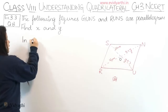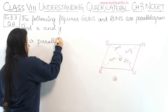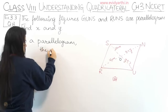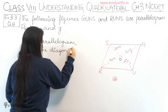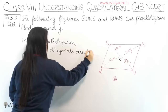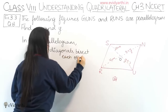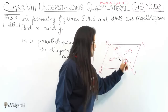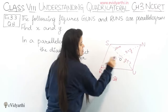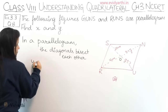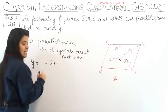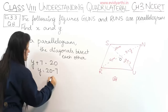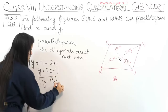We know that in a parallelogram the diagonals bisect each other. This means OU equals OS, and ON equals OR. Using OU equals OS, we get Y plus 7 equals 20. So Y equals 20 minus 7, which gives Y equals 13 centimeters.